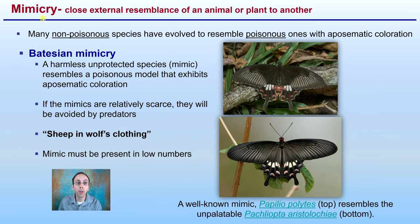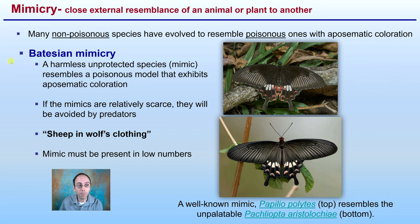With mimicry, it's a close external resemblance of an animal or plant to another. Many non-poisonous species have evolved to resemble poisonous ones with aposematic coloration. Batesian mimicry is where a harmless, unprotected species mimics or resembles the poisonous model that exhibits aposematic coloration. If the mimics are relatively scarce, they will be avoided by predators. This concept is like the wolf in sheep's clothing, and the mimic must be present in low numbers for this to be effective.